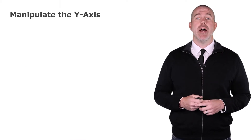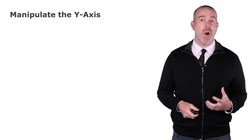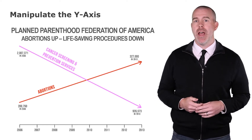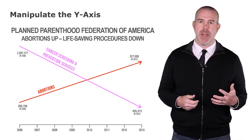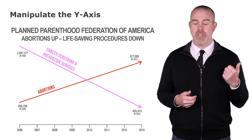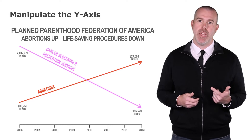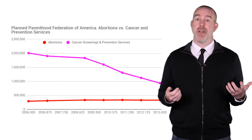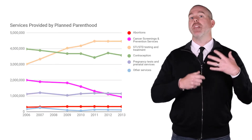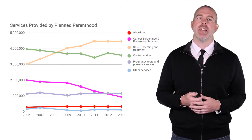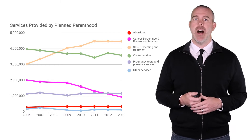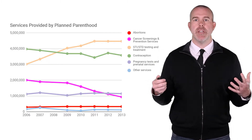A second common way to make a misleading graph is to manipulate the y-axis. Here we have one used in a report to Congress about why we should defund Planned Parenthood. This one uses two different y-axes — one for abortions and one for cancer screenings. If we put them on the same scale, we can see abortions are relatively flat, and yes cancer screenings have gone down, but including all the different funding mechanisms shows a more well-rounded representation.